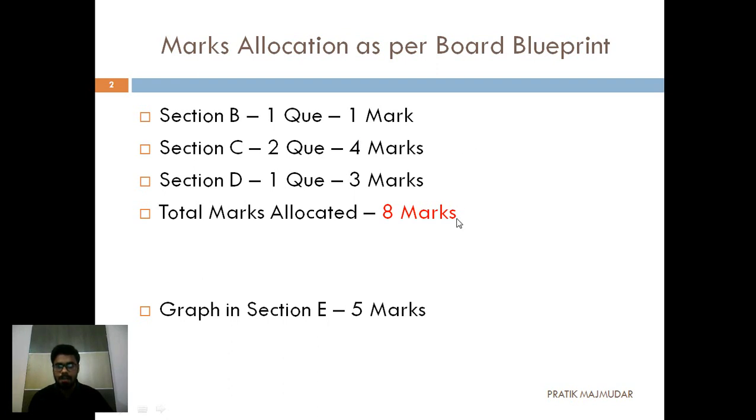Marks allocated as per Gujarat board for this particular chapter is eight marks. It is divided into three parts. Section B has one question for one mark, Section C has two questions for four marks, and Section D has one question for three marks. In total, eight marks you are going to get if you do it correctly. In Section E, one question related with the graph is going to be asked for five marks. So ultimately from this particular chapter, you can score 13 marks.